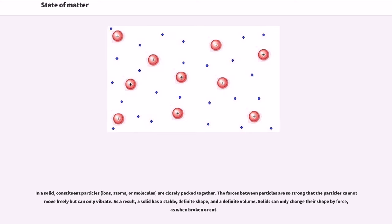In a solid, constituent particles - ions, atoms, or molecules - are closely packed together. The forces between particles are so strong that the particles cannot move freely but can only vibrate. As a result, a solid has a stable, definite shape, and a definite volume. Solids can only change their shape by force, as when broken or cut.